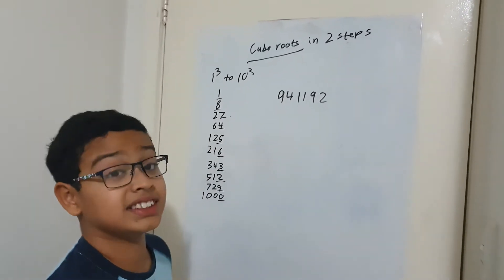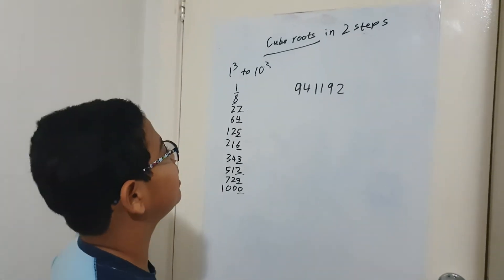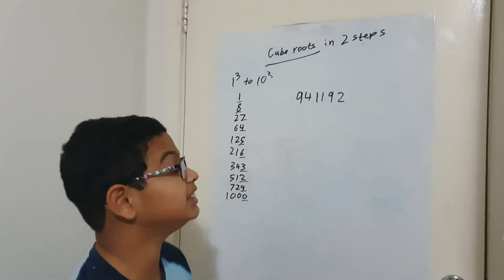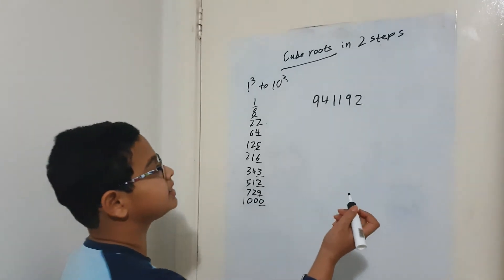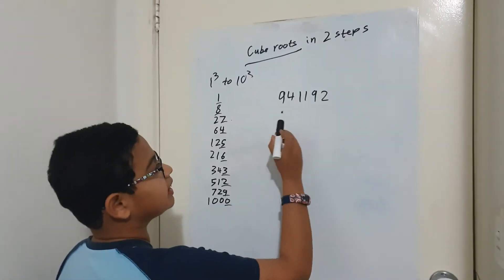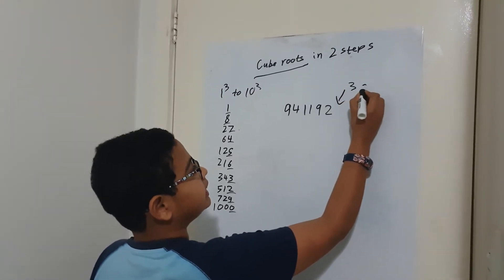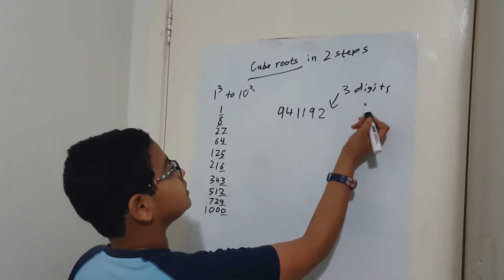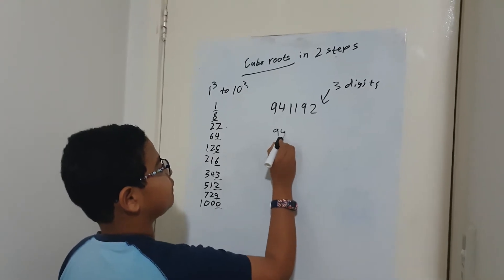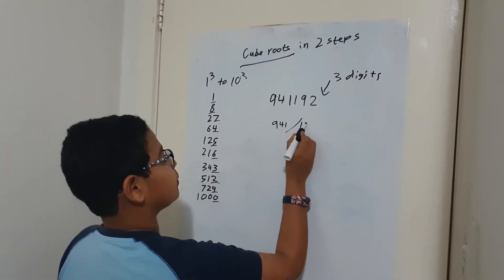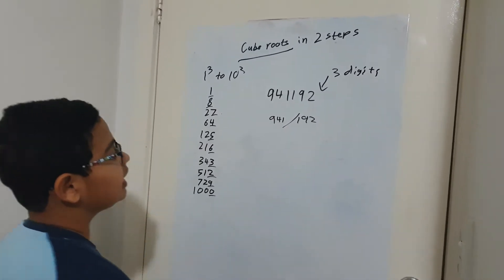The first thing you want to do, this is not actually a step because it doesn't require any calculations. The first thing you want to do is split the number into two parts, but you always have to make sure the last part has three digits. So I would split it as 941 and 192.